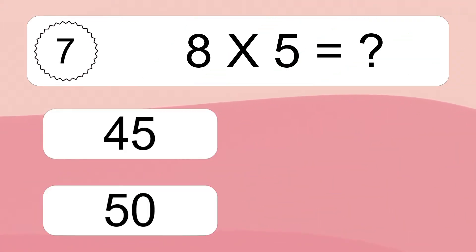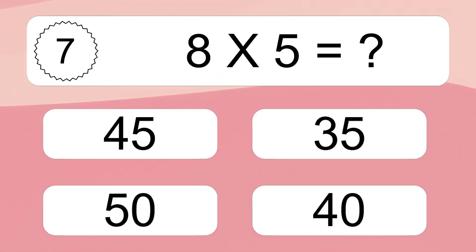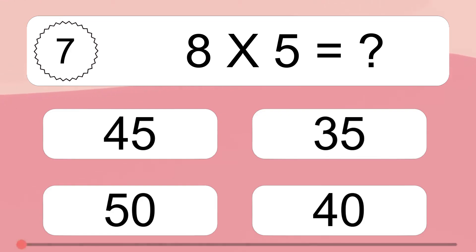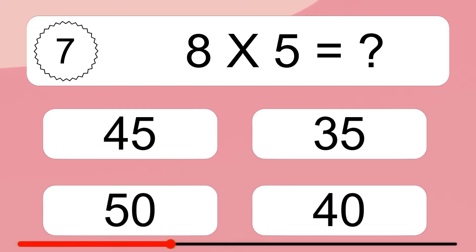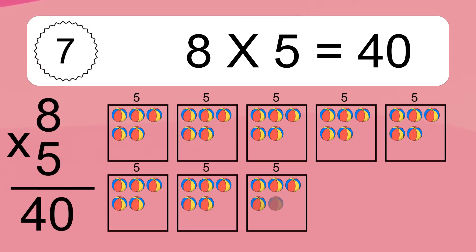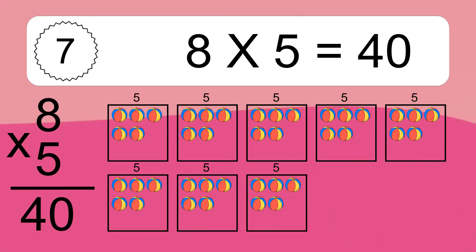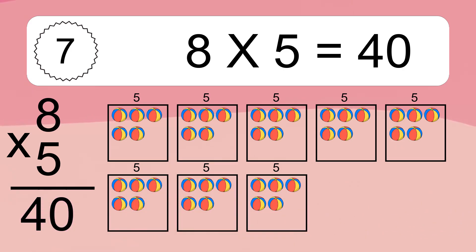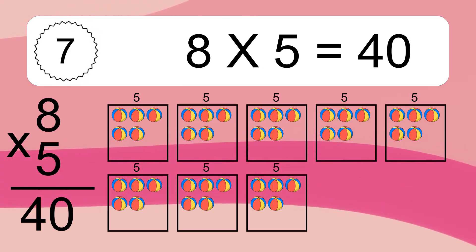8 times 5 equals what? 8 times 5 equals 40. We have 8 boxes, and each box has 5 colorful balls inside. If you count all the balls in all the boxes together, you will have 8 times 5 balls. This equals 40 balls.